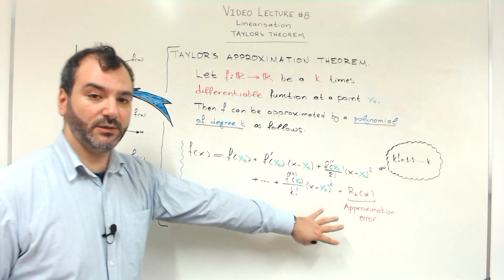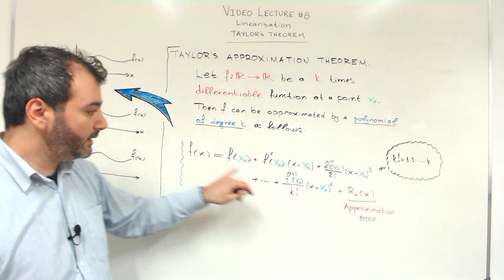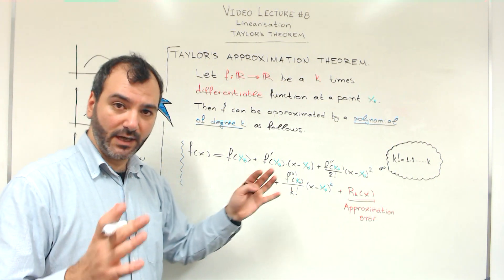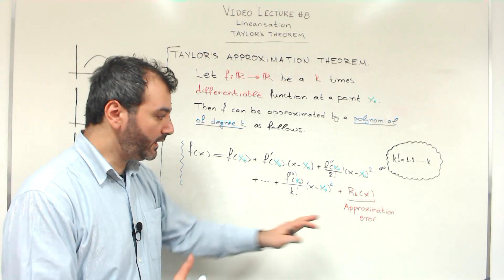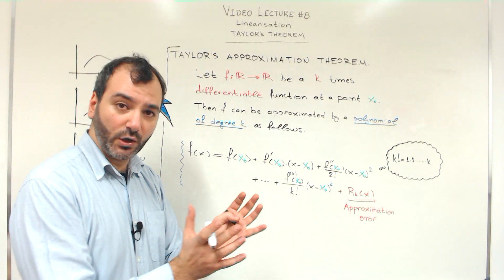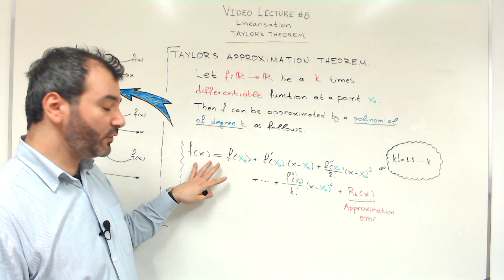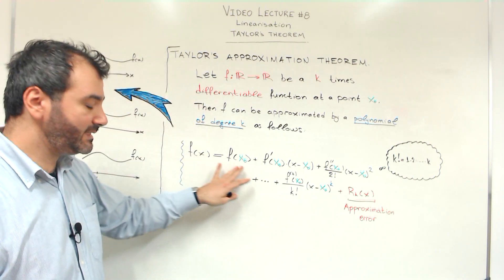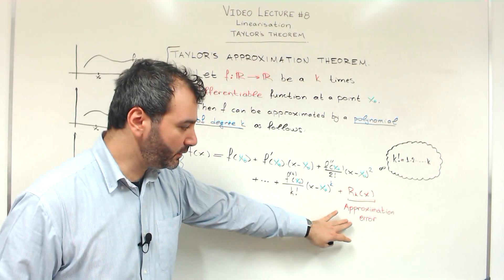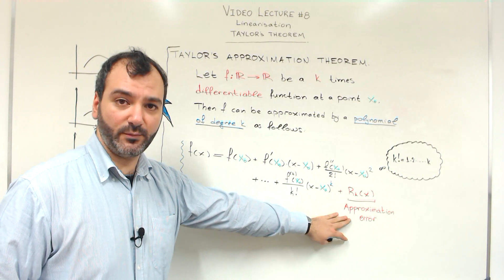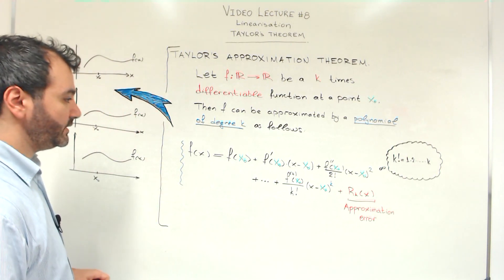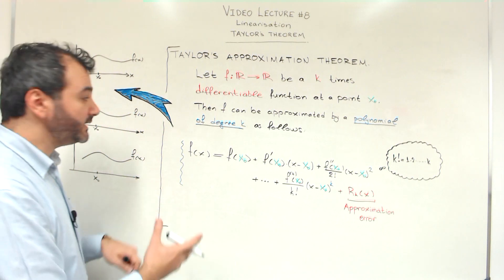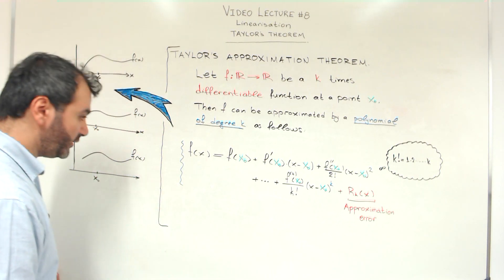This is the approximation of function f plus an approximation error, which becomes small when we go close to x0. So this is an approximation which is valid when x is close to x0. Let's first gain some intuition and understanding of what the theorem says.